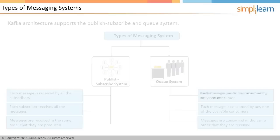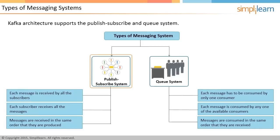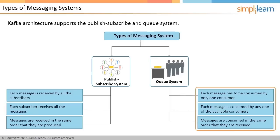Kafka architecture supports two types of messaging systems: publish-subscribe and queue system. In the publish-subscribe (pubsub) system, one system broadcasts messages and consumers subscribe to receive them. Each message is received by all subscribers, so if there are 100 messages published, each subscriber receives all 100 messages in the same order they are produced. In the queue system, each message is consumed by only one consumer. If there are multiple consumers, each message is consumed by any one of the available consumers in the same order that they are received.